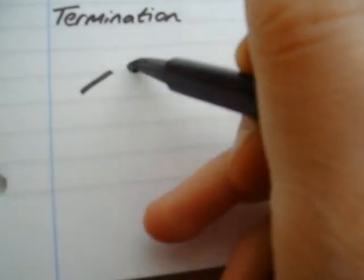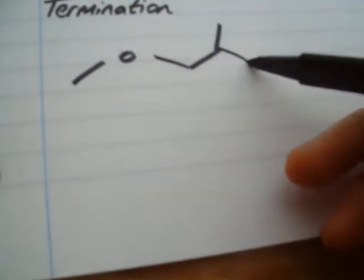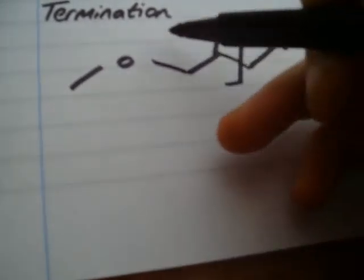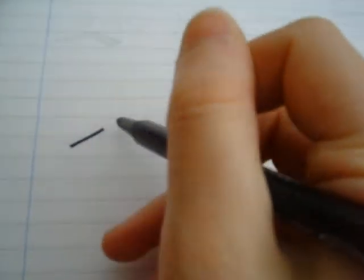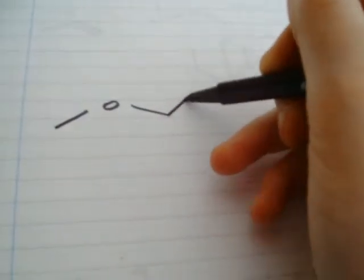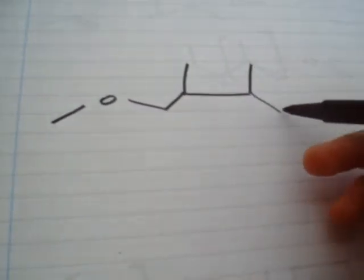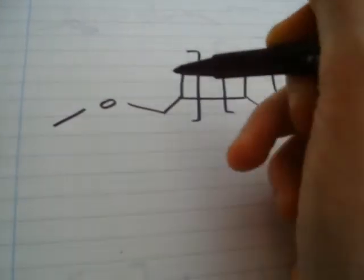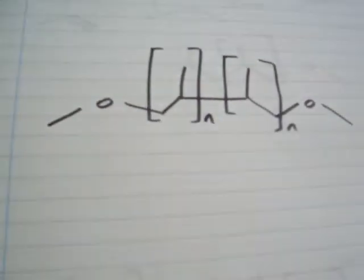The final step is termination, which occurs when two of the chains meet. We draw this out, and then the mirror image of that for ease of use. We get the two chains joining, and in the end this gives us our polymer. We have our repeating unit here, and our repeating unit here — and there you go, one polymer.